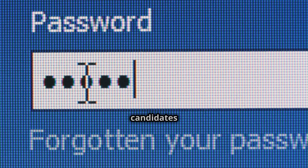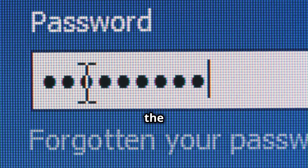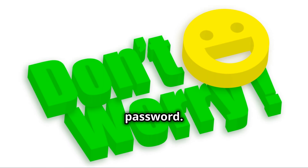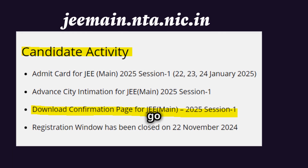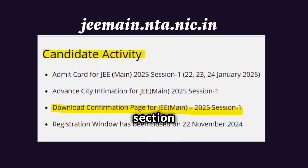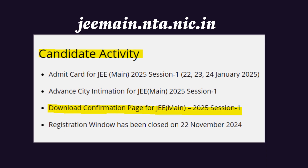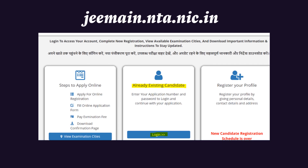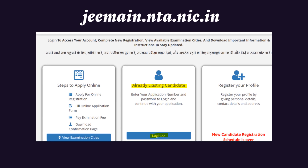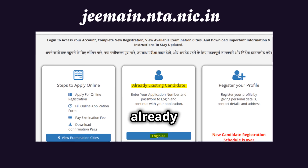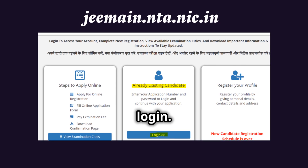For those candidates who forgot the password to download the admit card, don't worry. Follow these steps to reset your password. First, go to the official NTA website. Next, go to the Candidate Activity section. Then click on the link to download the confirmation page for JEE Main. This will take you to the next page, where you go to the section for Already Existing Candidate. Now click Login.